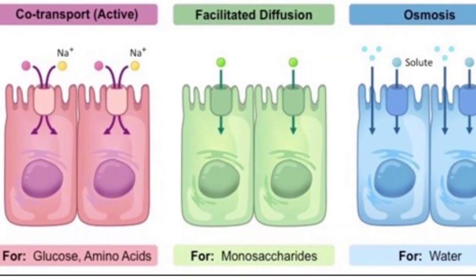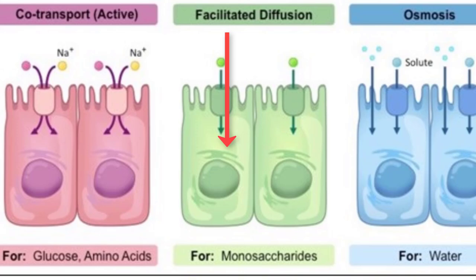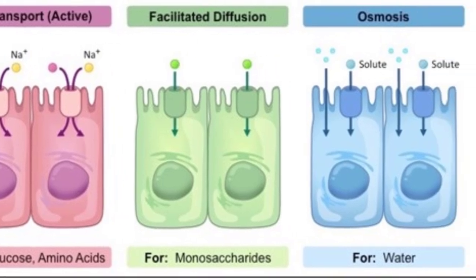Next, we have facilitated diffusion. This is where channel proteins help hydrophilic molecules move across the hydrophobic part of the cell membrane. This requires no energy, just a gradient that moves molecules from high to low concentrations. Examples of molecules that use facilitated diffusion are monosaccharides like fructose, vitamins, and some minerals.